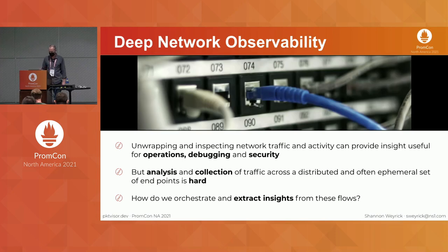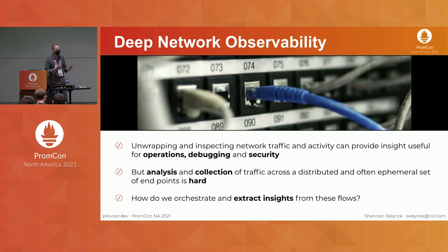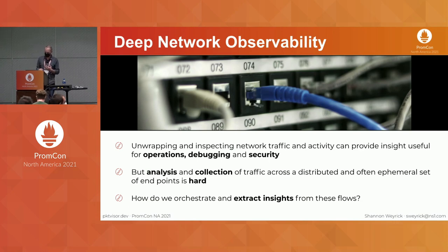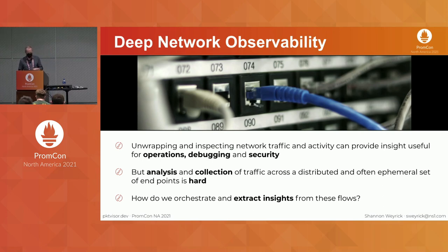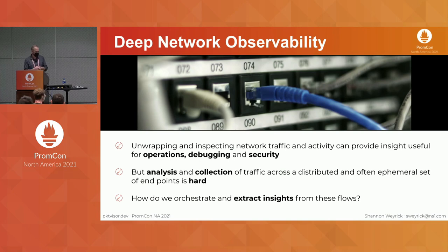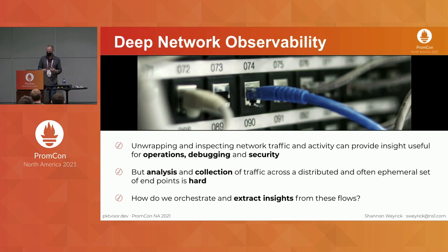Deep network observability — what do we mean by that? This is the idea that we can examine the traffic flows happening between end users and applications, or among the services that make up your application. We can inspect that network traffic, and if we can do that, we can gain insight into helping us run and operate applications, debug problems, and increase security. But analyzing this traffic, especially in a deep way, and collecting the results can be challenging, especially with a very distributed application across hybrid infrastructure, many geographic regions, or nodes coming up and down frequently.